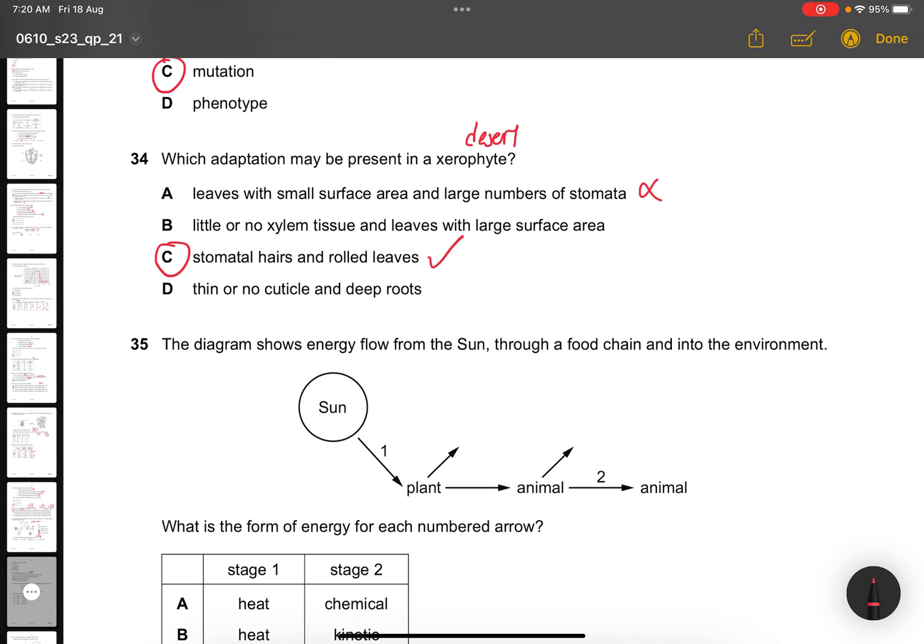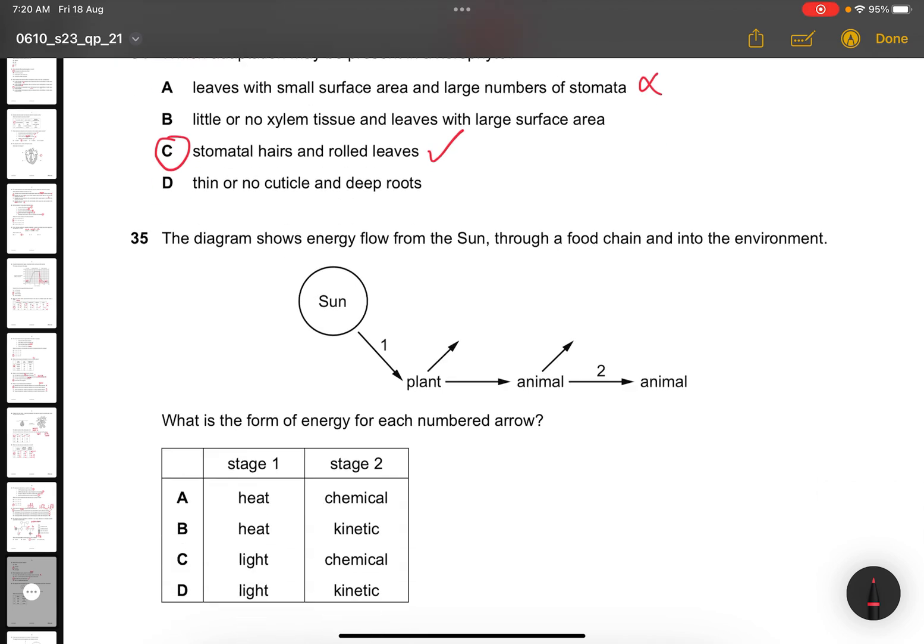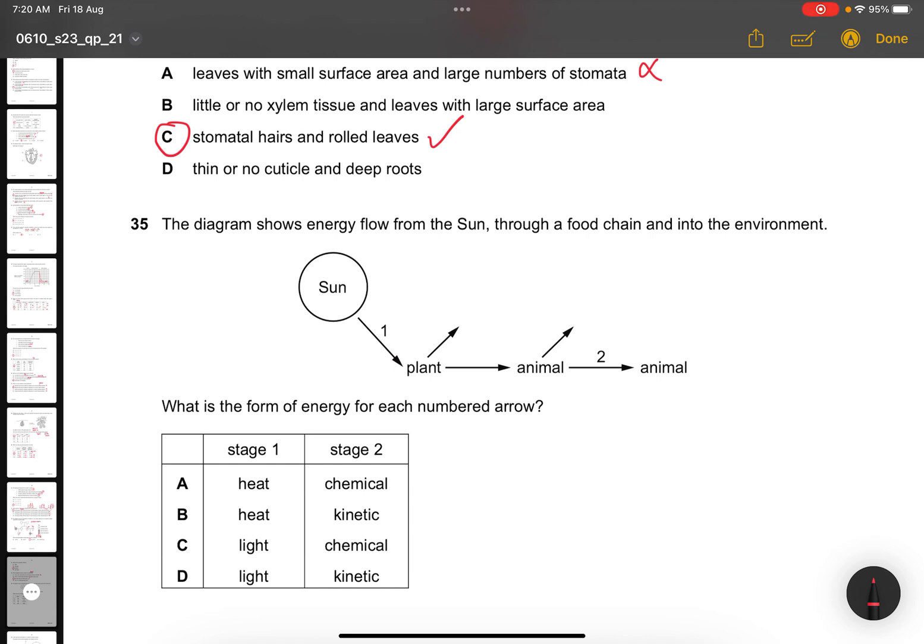Question 35. The diagram shows energy flow from the sun through a food chain into the environment. What is the form of energy for each numbered arrow? Form 1 will be, of course, light energy. And what is continued to be passed on will be chemical. So the answer is C.